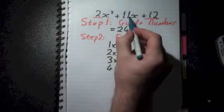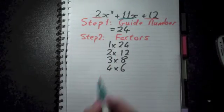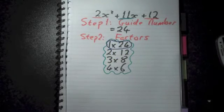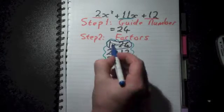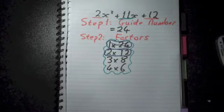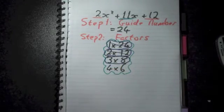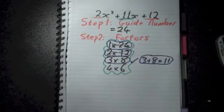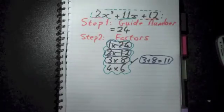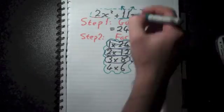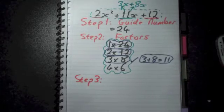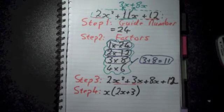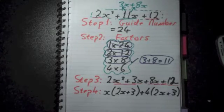Now here's the key part. Look at the middle number in the expression: 11. Which set of factors adds to give you 11? 1 plus 24 is 25 — no good. 2 plus 12 is 14 — that's out. But 3 plus 8 gives you 11. So in step 3 we take the original expression and replace 11x with 3x plus 8x. Then in step 4 we simply factorize the new expression by grouping, which we already know how to do.